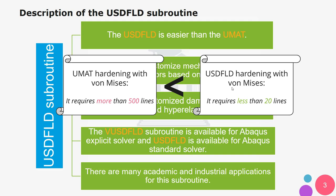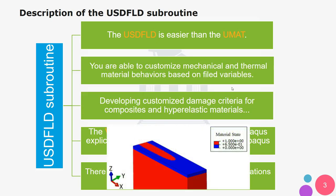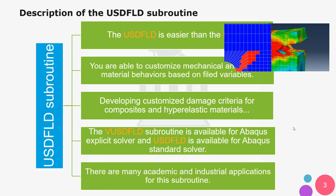Keep in mind that the UMAT subroutine can be more precise than USDFLD. In the USDFLD subroutine you are able to customize mechanical and thermal material behaviors using variables already available in Abaqus. For example, when a laser beam passes through powder turning it into molten liquid, we will have two different phases of matter simultaneously in our simulation, which we can simulate with the USDFLD subroutine.